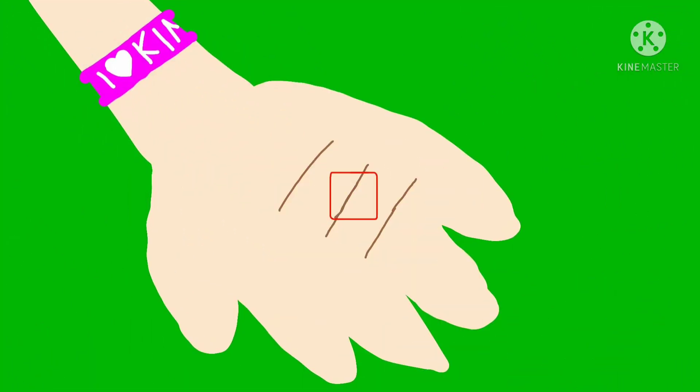At 10 centimeters, we could see Sarah's scratched hand up close. On the top left corner, you can see Sarah's bracelet mentioning her love against kindergarten.